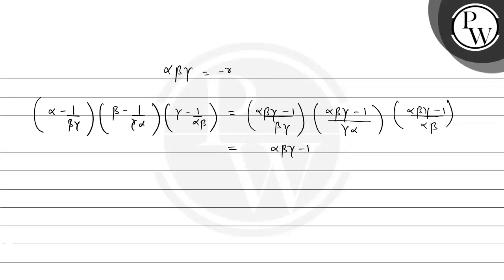This becomes alpha beta gamma minus 1 whole cube divided by alpha beta gamma whole square, which simplifies to alpha beta gamma minus 1 divided by alpha beta gamma whole square.